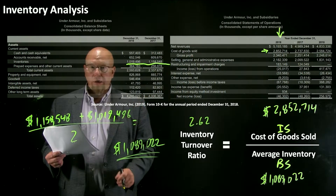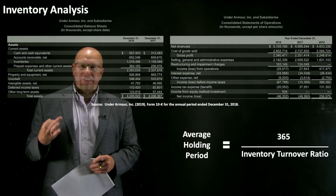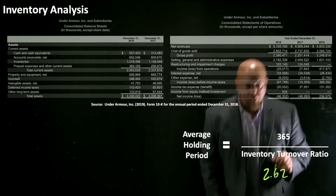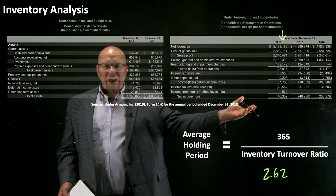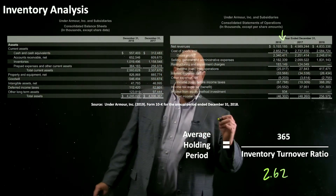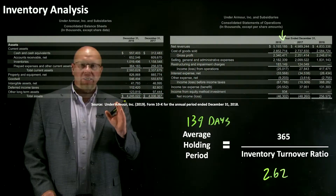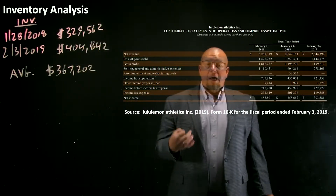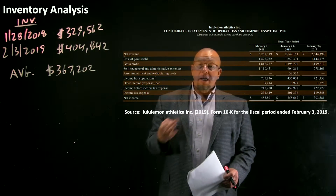Under Armour cycled through its inventory 2.6 times during 2018. Sometimes you might want to express things in terms of days instead of a turnover ratio — we calculated the inventory turnover ratio as 2.62 for 2018. To get days, simply take the turnover ratio and divide it into the number of days in a calendar year. Under Armour on average held its inventory for 139 days — meaning merchandise hung around for 139 days before Under Armour was able to sell it to customers. It's good to look at individual company performance but also benchmarks and industry norms.